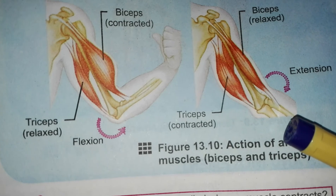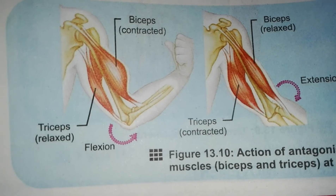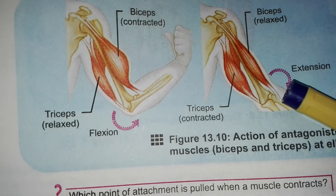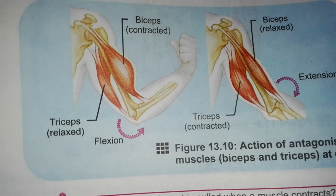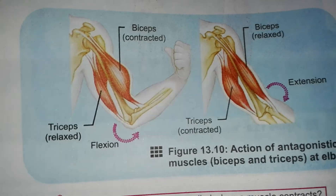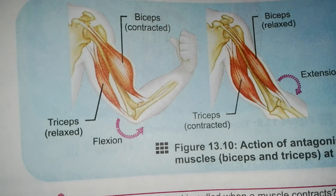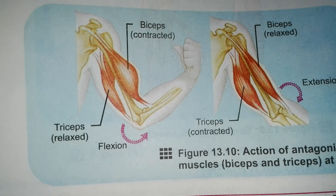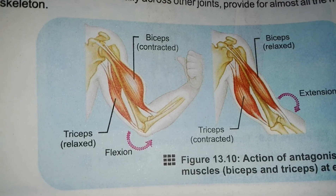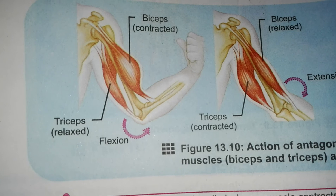During extension, the triceps contract and pull from the lower side, while biceps relax. This alternating contraction and relaxation between biceps and triceps is how the elbow joint moves through flexion and extension.